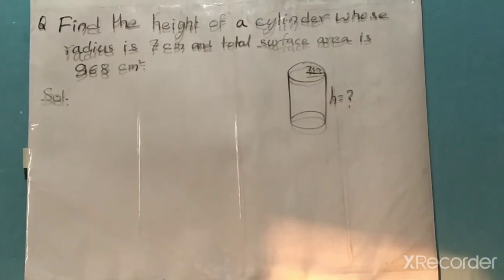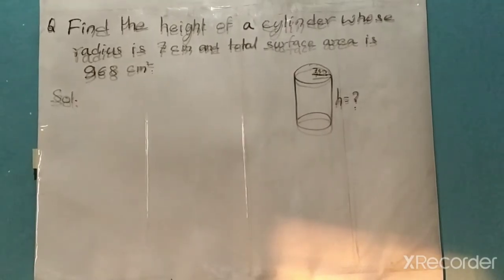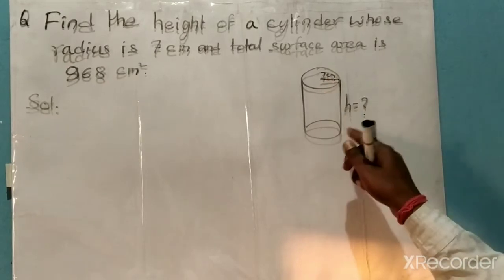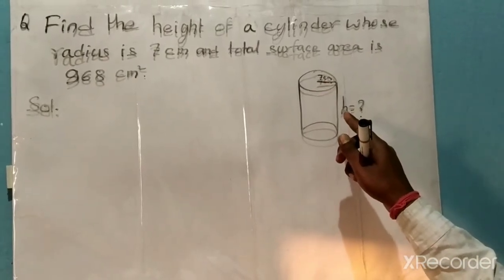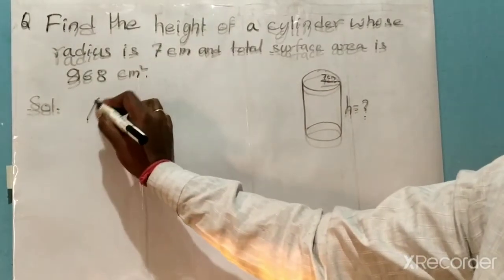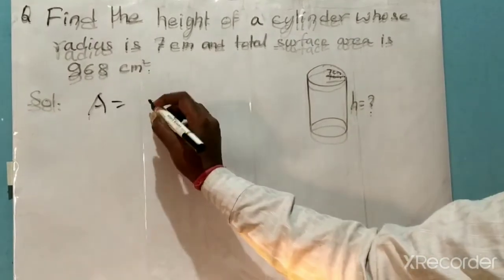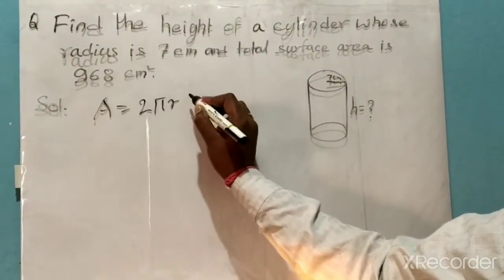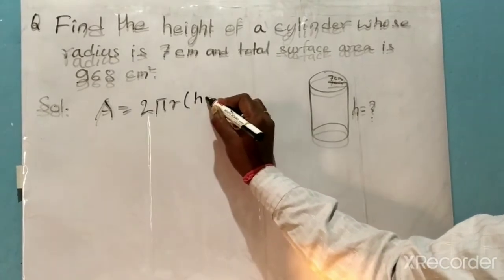Let's come to the point. To find the total surface area of a cylinder, we have to apply the formula: Area = 2πr(h + r), where h is the height and r is the radius.